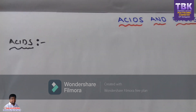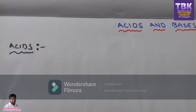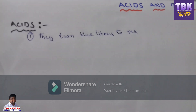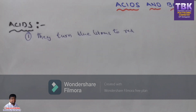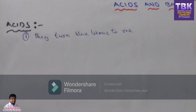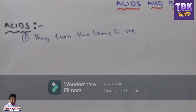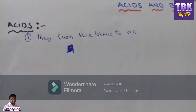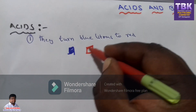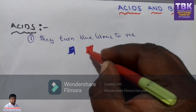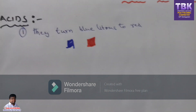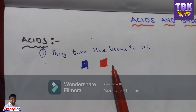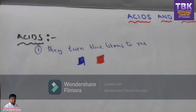First we discuss about the properties of acids. The first property of acids is acids turn blue litmus to red litmus. When you add the acid to the blue litmus paper, the litmus paper is converted into red. That is the first property of acid.